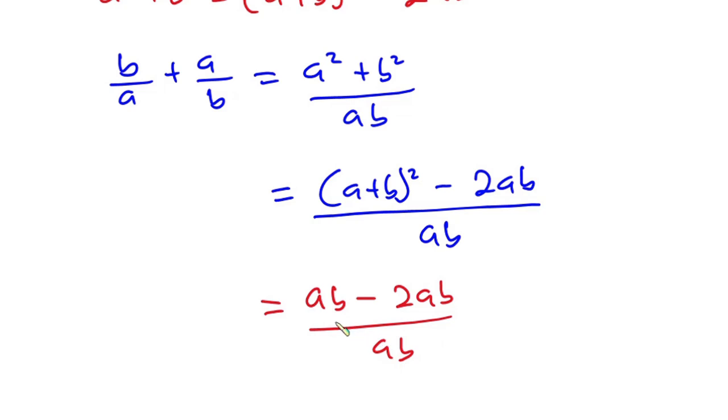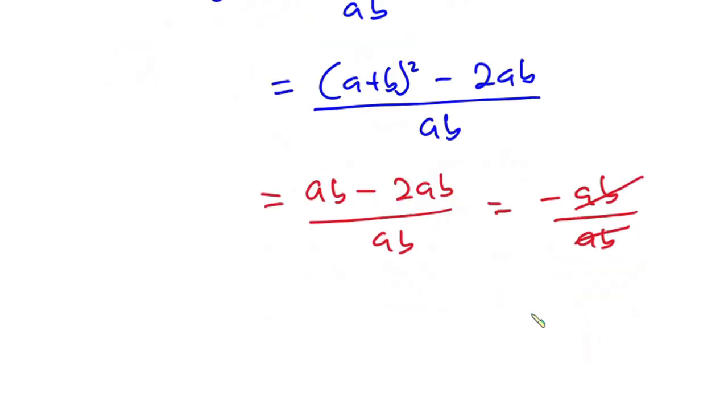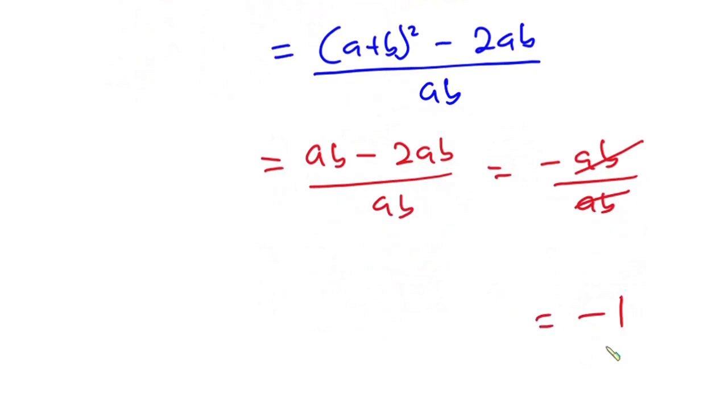Now let's simplify this. ab minus 2ab is negative ab divided by ab. And straight away you can see that this ab will cancel, and we are left with negative 1.